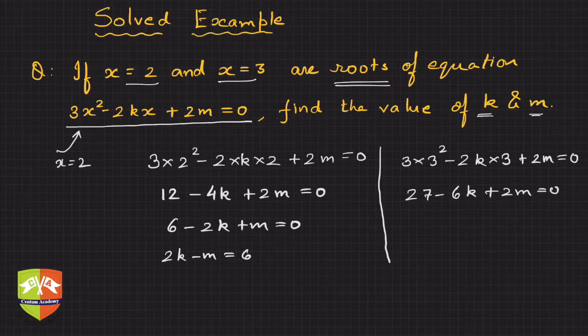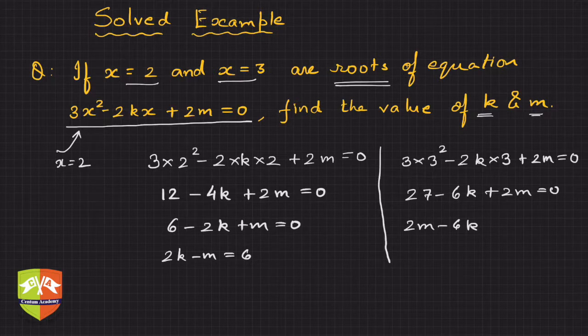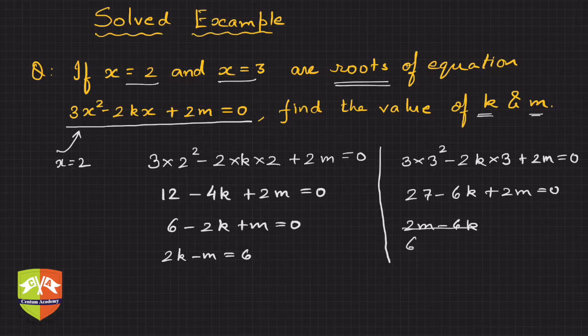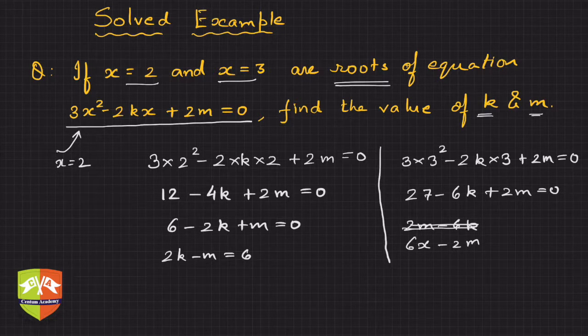So you will get 2m minus 6k, or rather let me write it like 6k minus 2m for simplicity. So 6k minus 2m is equal to 27. This is equation number 2.